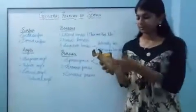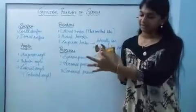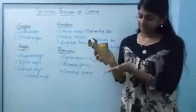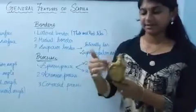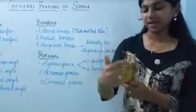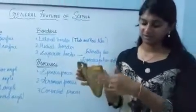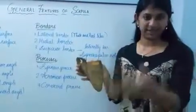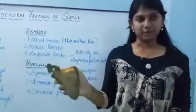Now coming to the side determination of the scapula. The glenoid cavity should be facing laterally, the inferior angle should be downwards, the lateral border should be lateral, the spinous and acromion processes should be facing behind, and the costal surface should be placed anteriorly. This is the right side scapula.